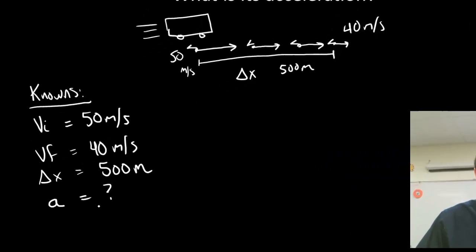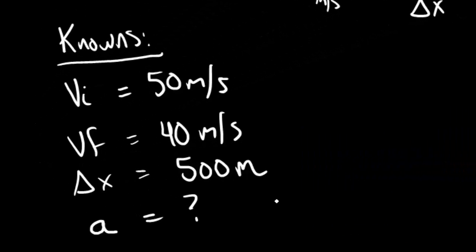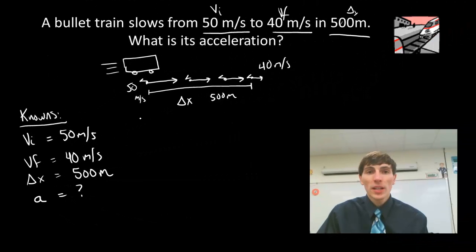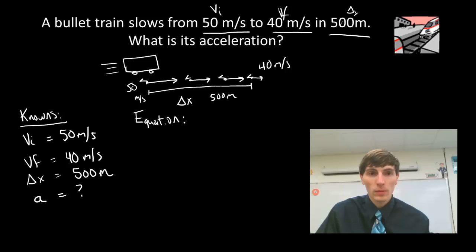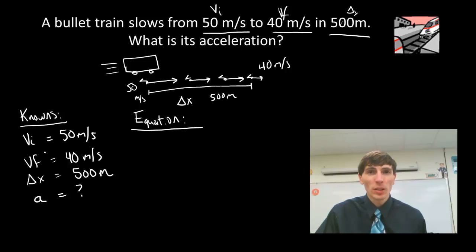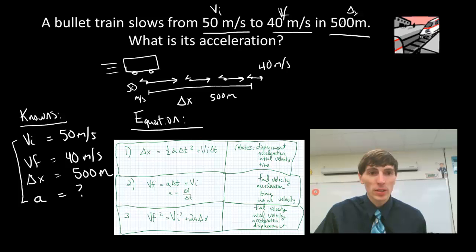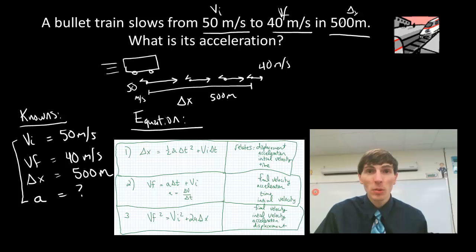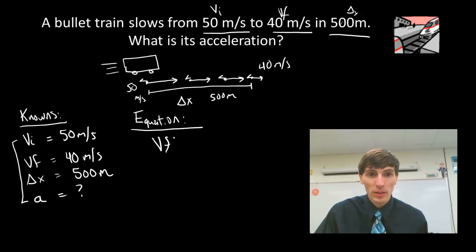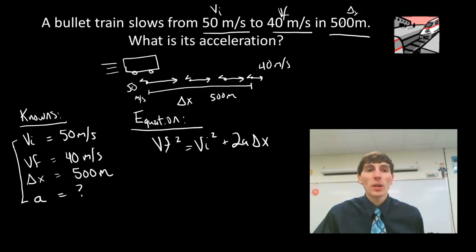This is the K step — writing my knowns and unknowns in a clear, easy-to-see way. The next step in KIPA is to find an equation, the E. I need to come up with an equation that relates these variables. Looking at that list, the only one that relates all four — final velocity, initial velocity, acceleration, and displacement — is VF squared equals VI squared plus 2A delta X.